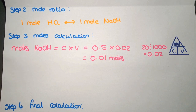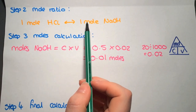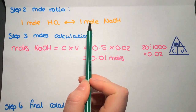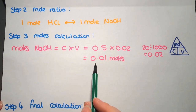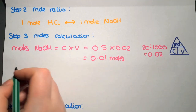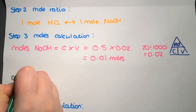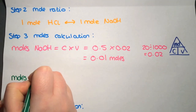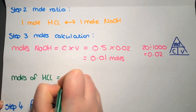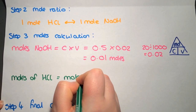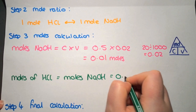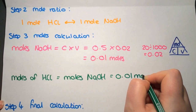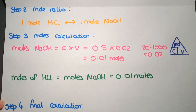Now looking at the moles of hydrochloric acid — for every one mole of sodium hydroxide we use, we need one mole of hydrochloric acid. In our reaction we only have 0.01 moles, so the moles of HCl must equal the moles of sodium hydroxide. We will be using 0.01 moles of HCl.